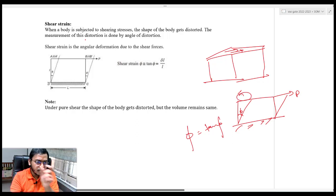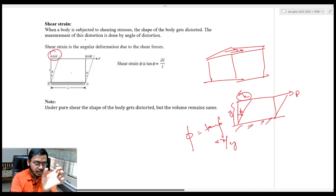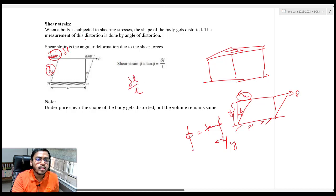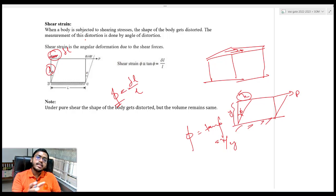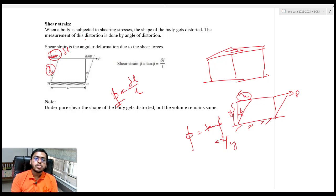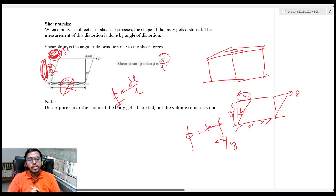Tan φ = x/y. If the body moved by a displacement δl and this dimension (perpendicular to displacement) is l, then tan φ = δl/l — that gives your shear strain. Many people make a mistake by taking the total length L. No — be very clear: it is the displacement δl divided by the small dimension l (perpendicular to the direction of shear force). I hope that is very clear.